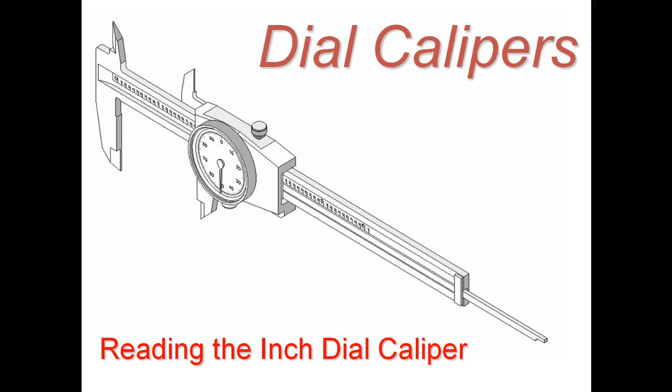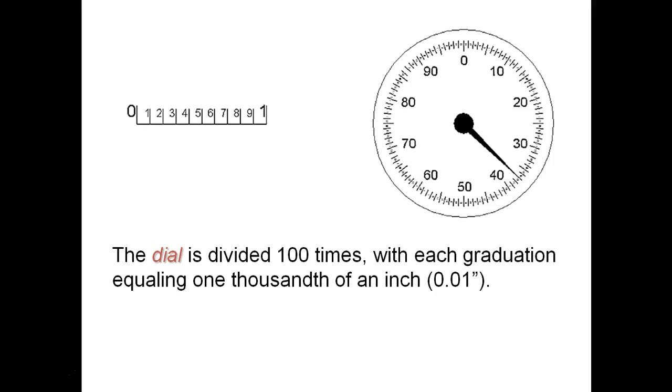Now let's get into actually how to read this. The dial is divided into a hundred times, so each one is equal to one-hundredth of an inch. So one, two, three, four, five, six, seven, eight, nine, ten, twenty, all the way around to a hundred.